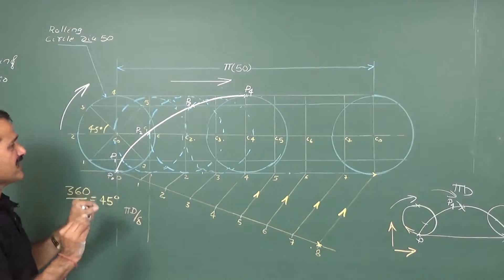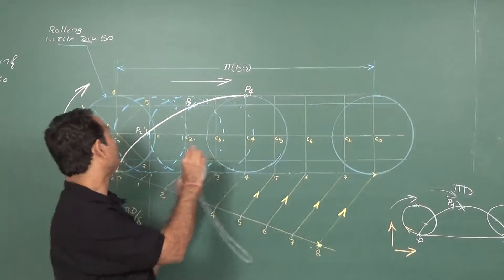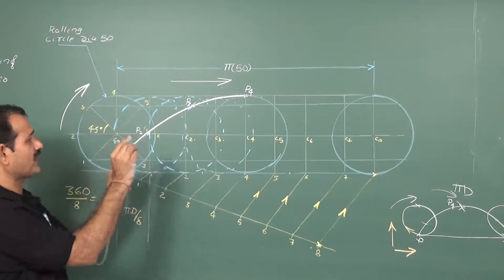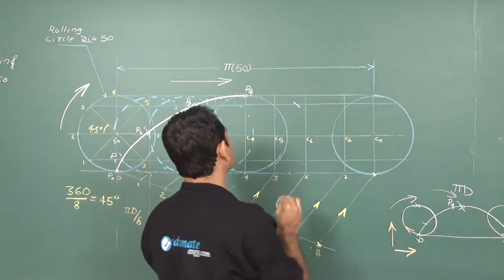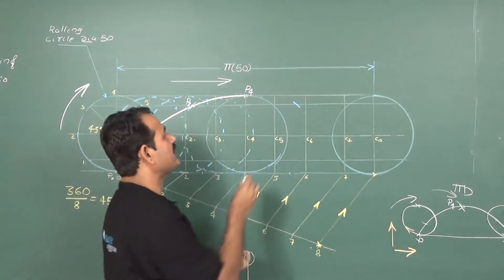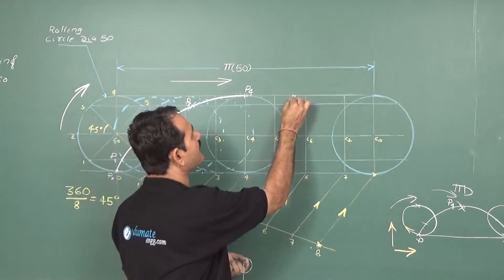Take the radius. This is the radius of circle. The next point is C5. The line coming from 5 is over here. I have to take C5 as the center and cut on this path. This gives me the next point P5.